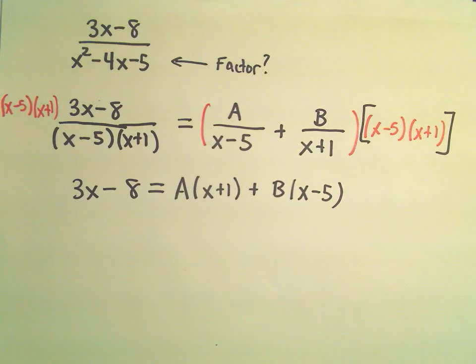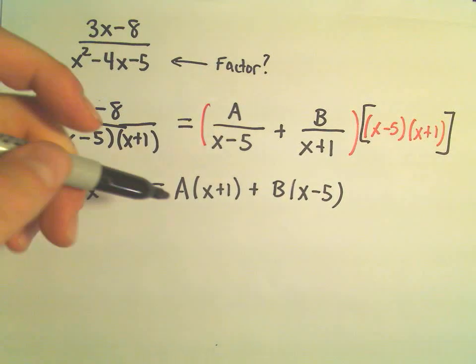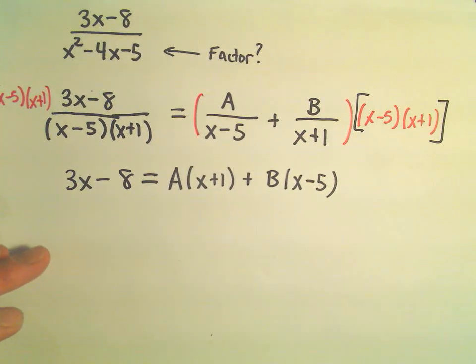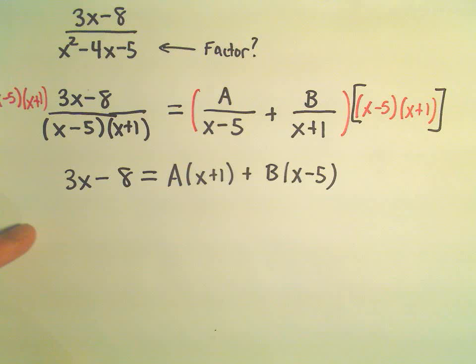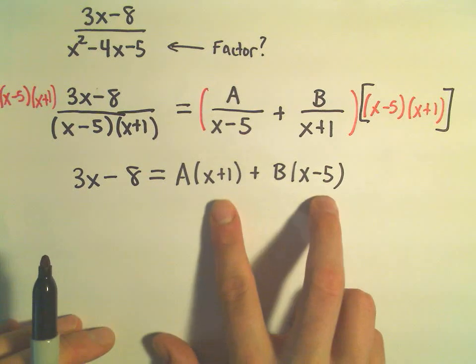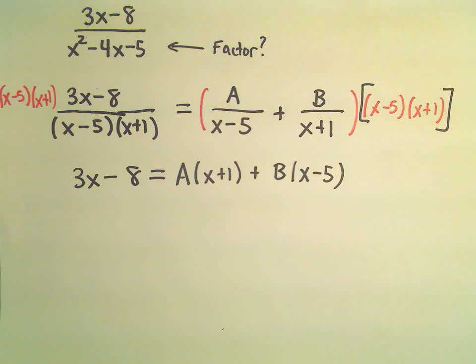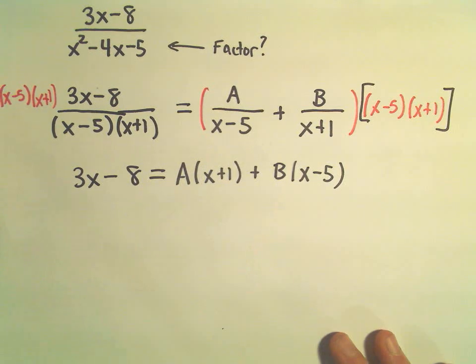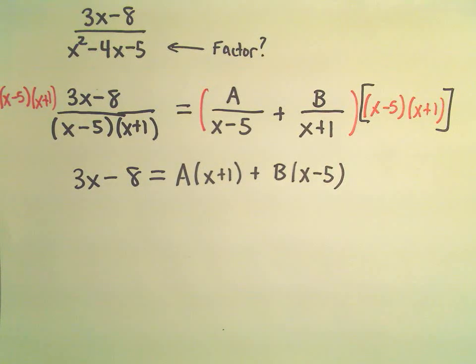Now at this point, there's a couple different things you could do. We could start doing, we could multiply things out and do a process that's known as equating coefficients. You get a system of linear equations you have to solve. But when your factors are linear, there's actually a little shortcut we can do. So I'm going to use this little shortcut. And in some of the problems, we'll see you have to do this equating coefficients, but we'll cross that bridge when we come to it.